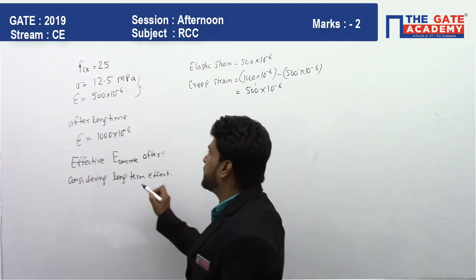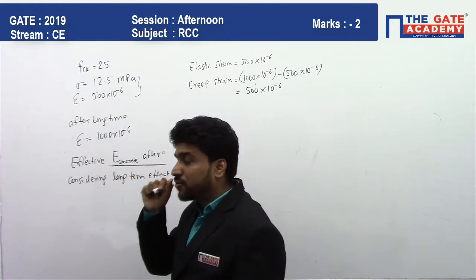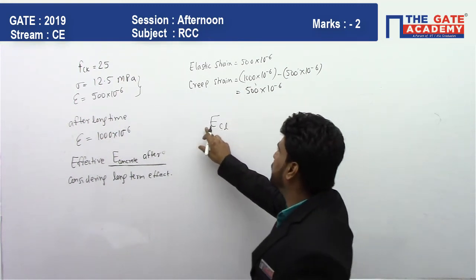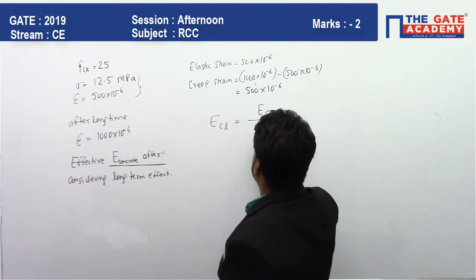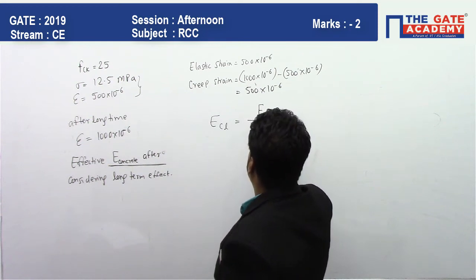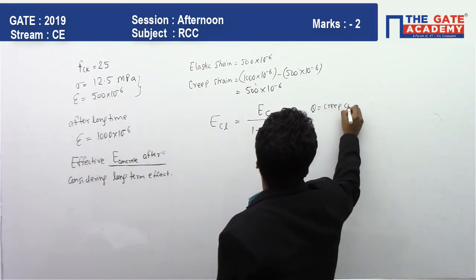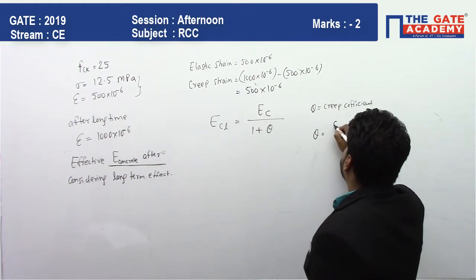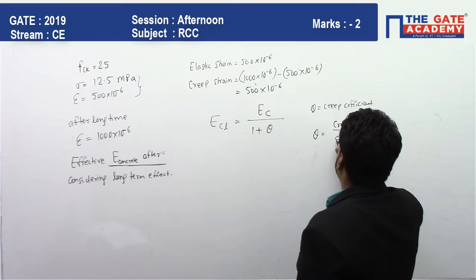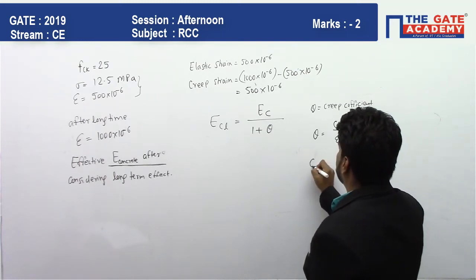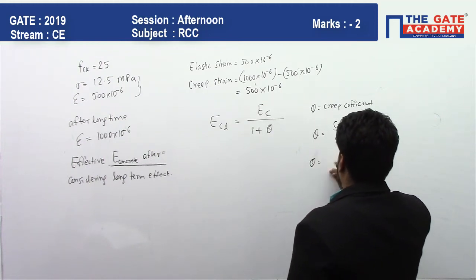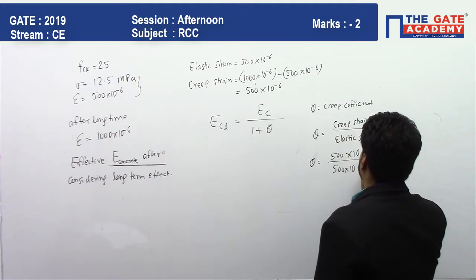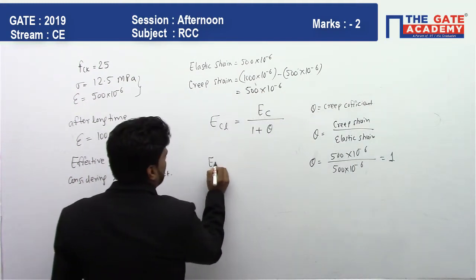We need the elastic modulus after considering the long-term effect. The formula is: effective elastic modulus Ecl = Ec / (1 + θ), where θ is the creep coefficient. The creep coefficient θ = creep strain / elastic strain = 500×10⁻⁶ / 500×10⁻⁶ = 1.